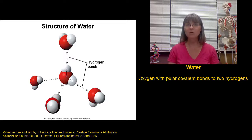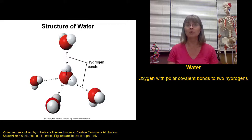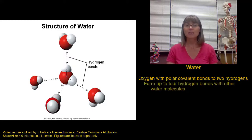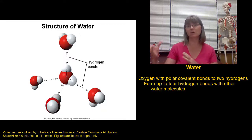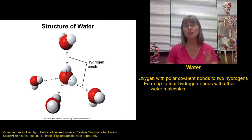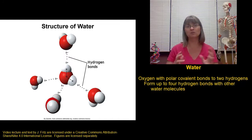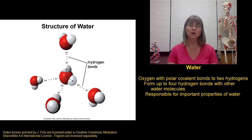Let's talk more about water because water is so vitally important for life — we can't survive without it. We've already looked at the structure of water: a single water molecule is composed of one oxygen with covalent bonds to two hydrogens, and these covalent bonds are polar covalent bonds. This allows water molecules to form hydrogen bonds with each other, creating huge networks that are constantly breaking and reforming. It's these hydrogen bonds that are responsible for the very important properties of water that make it so useful to the creation and maintenance of life.